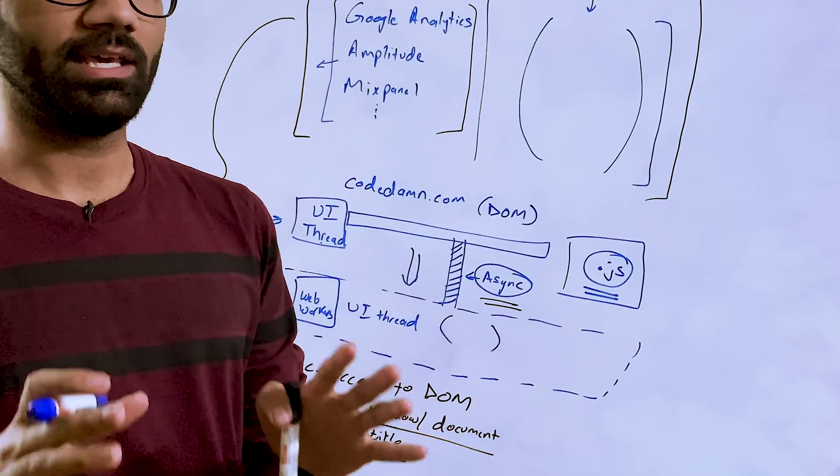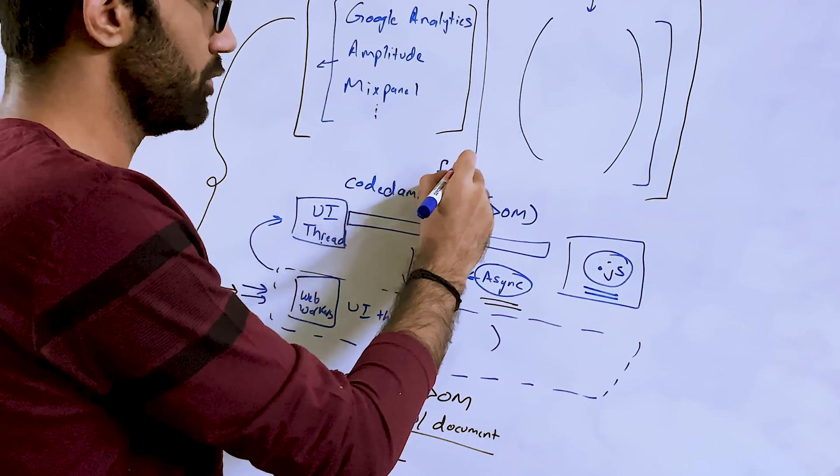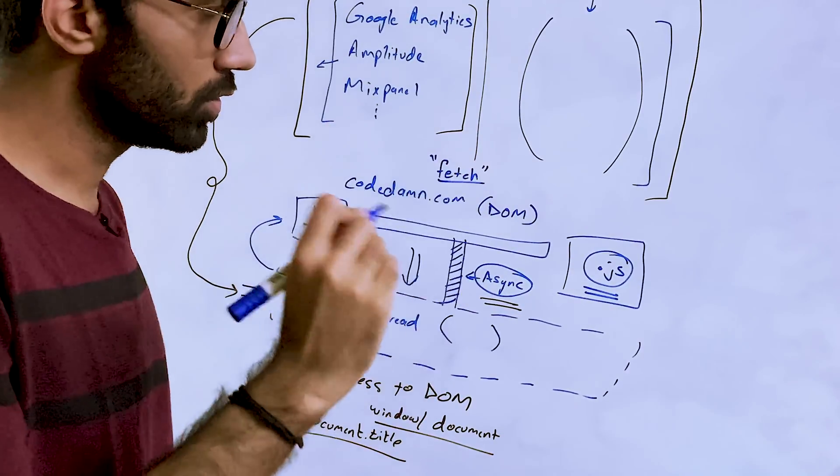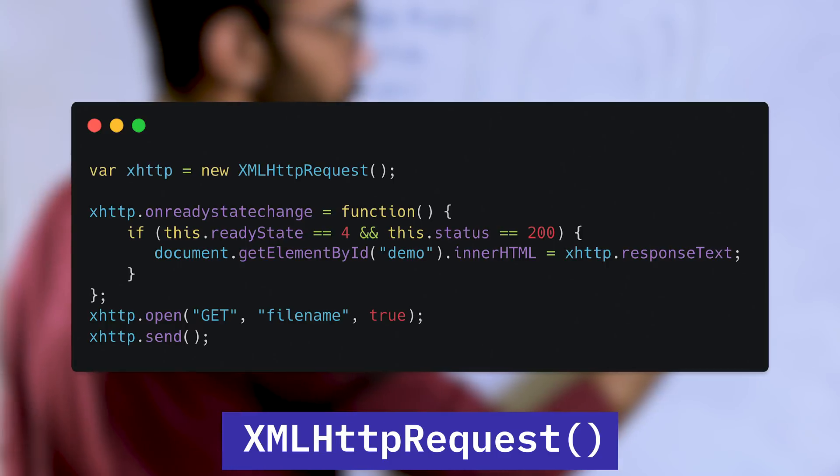If you have used JavaScript before fetch was introduced, you know that there was something known as XML HTTP request. That's still available today.